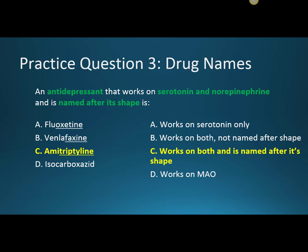A is incorrect because it only works on serotonin. B, venlafaxine, is incorrect — it does work on serotonin and norepinephrine, but it's not named after its shape. And D, isocarboxazid, is incorrect because it works on the monoamine oxidase enzyme.